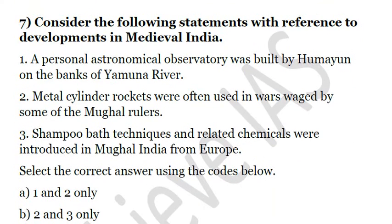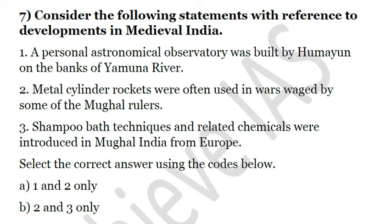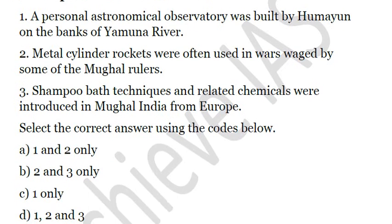The next question: consider the following statements with reference to developments in medieval India. First, a personal astronomical observatory was built by Humayun on the banks of the Yamuna river. Second, metal cylinder rockets were often used in wars by some of the Mughal rulers. Third, shampoo bath techniques and related chemicals were introduced in Mughal India from Europe. The first and second statements are correct — Humayun was quite interested in astronomy and built such an observatory, and metal cylinder rockets were used in wars. The answer is A: one and two only.